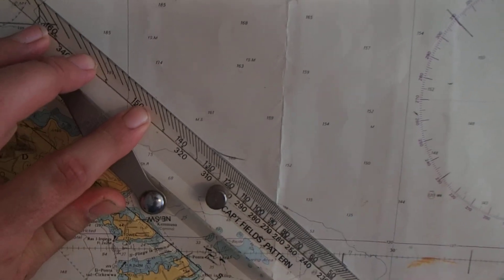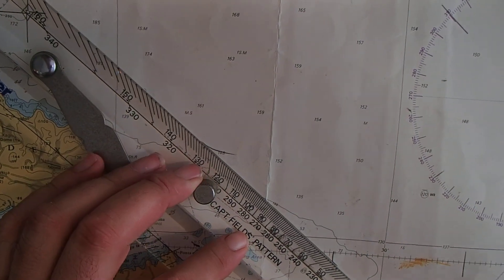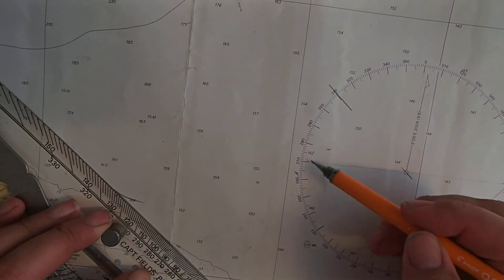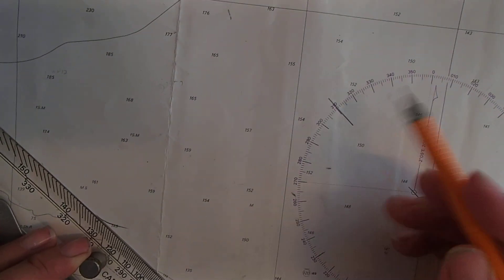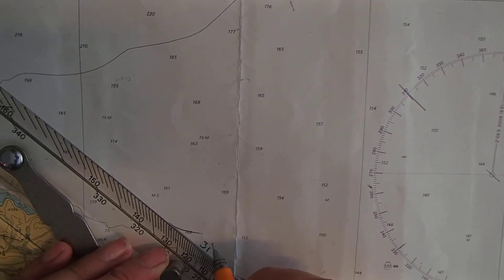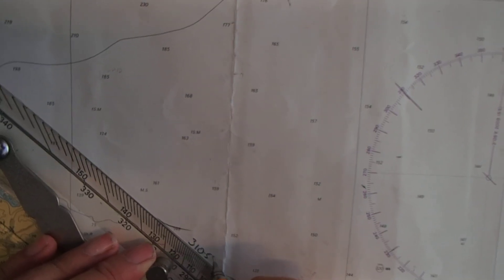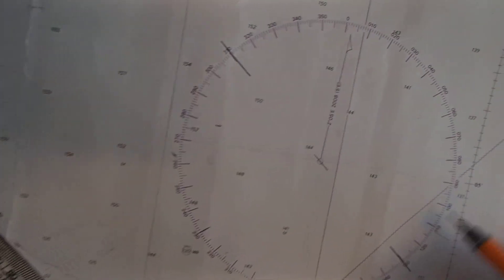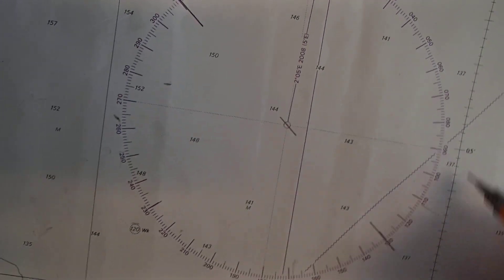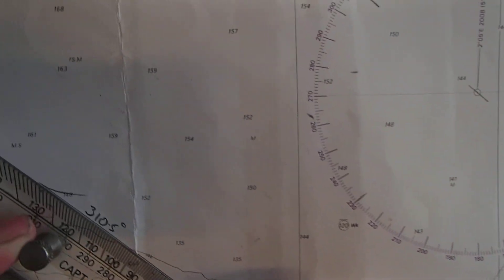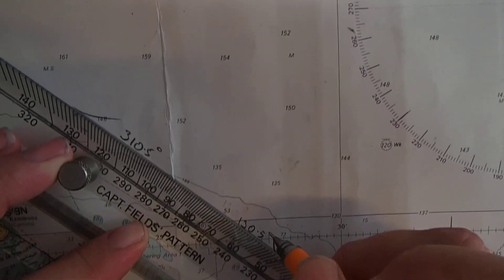So that way we have two course lines. We go back to our compass. If we're going in our northwesterly direction we'll be going on course 310.5 degrees. If we are going on the southeast direction we are going on a course of 130.5 degrees.